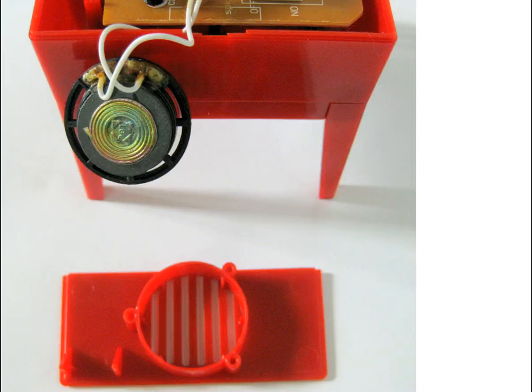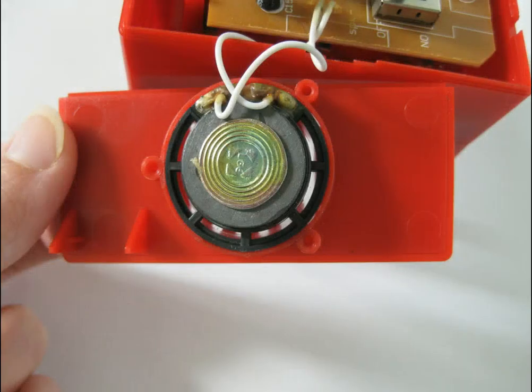Now remove the speaker cover from the kit. The speaker cover looks like the part on the bottom of this image. Place the speaker inside of the speaker cover as shown here. Make sure the direction is the same as in this picture. The triangles that stick out of the speaker cover should be on the opposite side of the speaker wires.